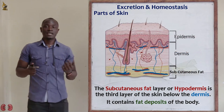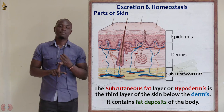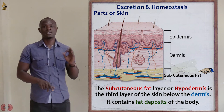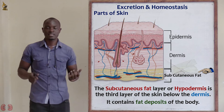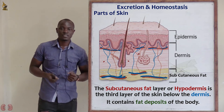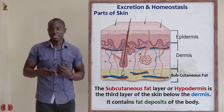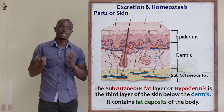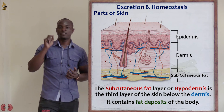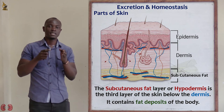Now let's look at the third part of the skin. The first part is the epidermis, after that we have the dermis, and after the dermis we have the subcutaneous fat layer — the third and lowest part of the skin. The subcutaneous fat is a layer of fat found beneath the dermis that binds the skin to muscles and other organs deep inside the body.